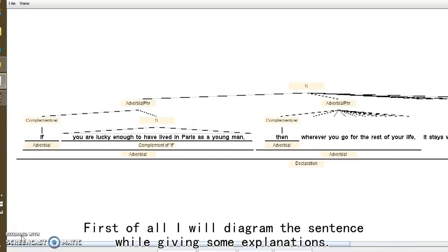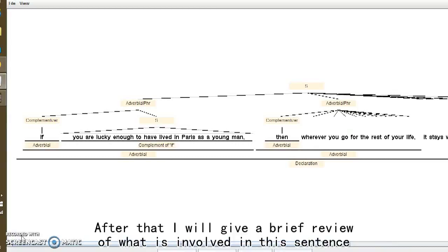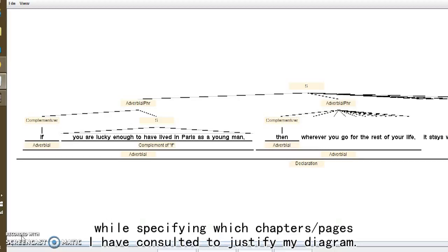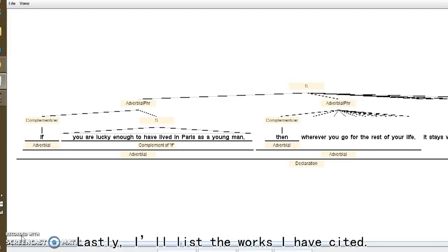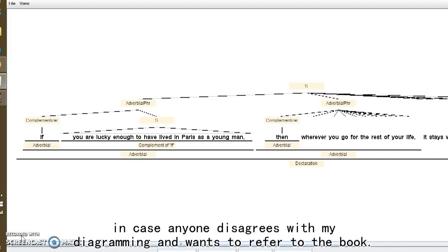First of all, I will diagram the sentence while giving some explanations. After that, I will give a brief review of what is involved in the sentence, while specifying which chapters or pages I have consulted to justify my diagram. Lastly, I will list the works I have cited. You will also see some page numbers in my subtitles. These are from Hopper's book, in case anyone disagrees with my diagramming and wants to refer to the book.